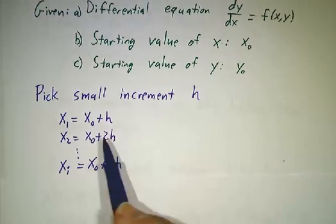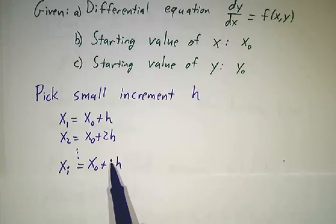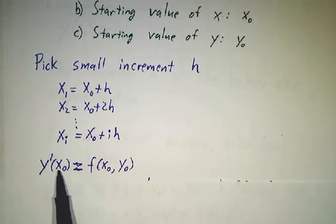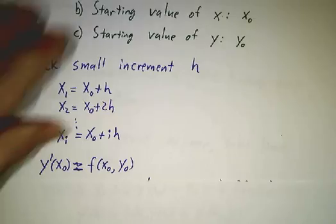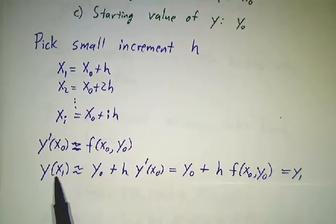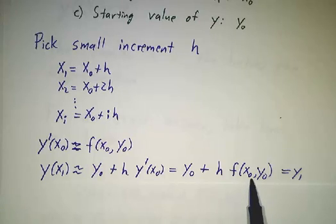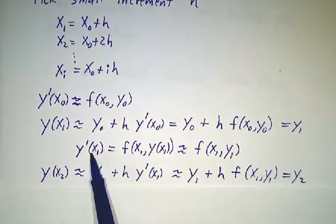And at each step, you're going to increase x by that value. And how much does y go by? Well, at each step, you approximate the derivative by the differential equation. So y of x1, which is going to be approximately where you started, plus h times the rate of change, and the rate of change is given by f of x0, y0, and we'll call that y1. And then we compute the derivative at y1,